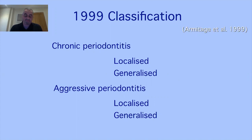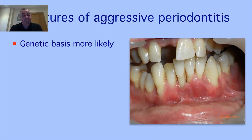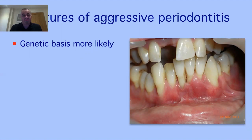Specialist periodontists could say to general practitioners, hygienists, and therapists: treat the chronic, refer the aggressive. If chronic doesn't respond to treatment, we'll help with those cases too. There was a nice delineation between the two conditions. With the new classification this delineation has gone, but it shouldn't change the type of patient you treat or refer. Localized was defined as less than 30% of sites affected; generalized was more than 30%.